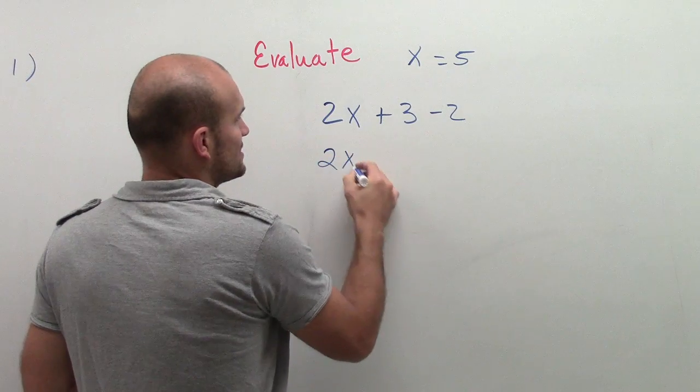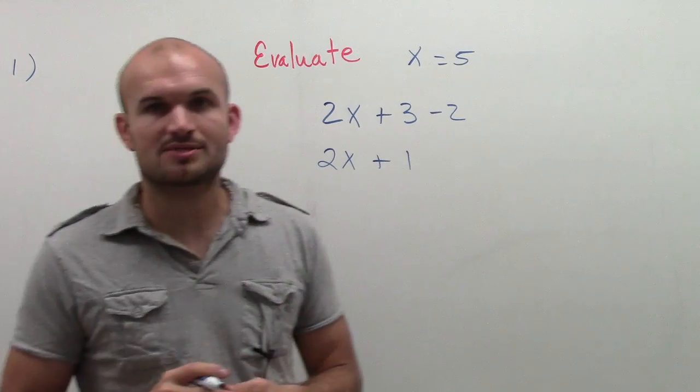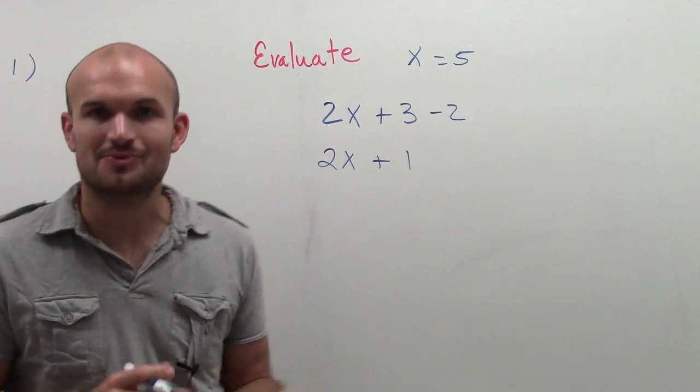By doing that, I get 2x, and 3 minus 2 is positive 1. So I simplify that to 2x plus 1.